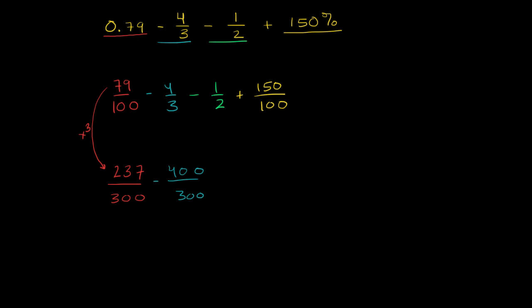1 half. 1 half. If our denominator is 300, we multiply the denominator by 150 to go from 2 to 300. So we have to multiply the numerator by 150.